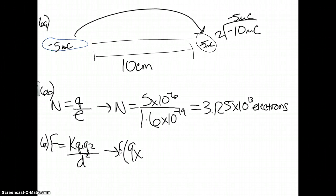K is 9 times 10 to the 9th, and because it is the same value for both objects we don't have to write it twice, we can just do 5 times 10 to the negative 6 squared, and we put that over our distance 0.1 meters squared, because we can't do 10 centimeters because that is not the standard measurement.